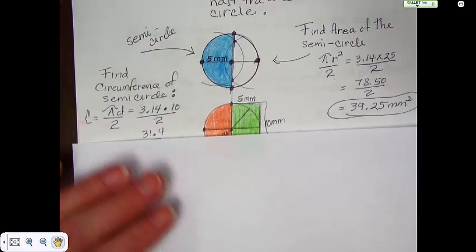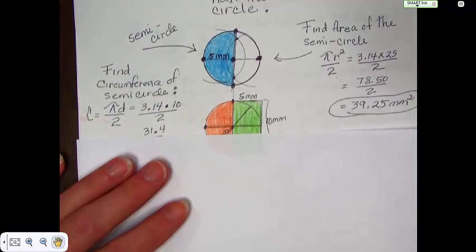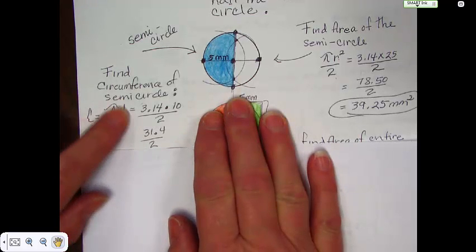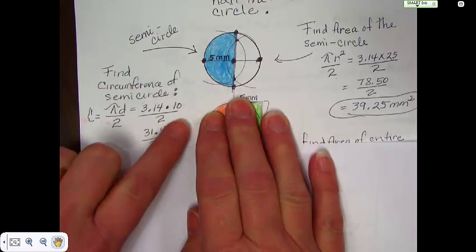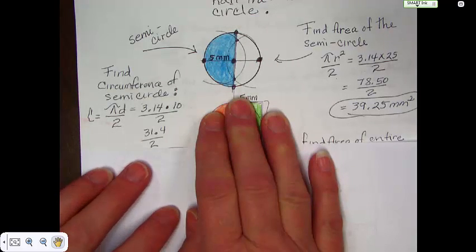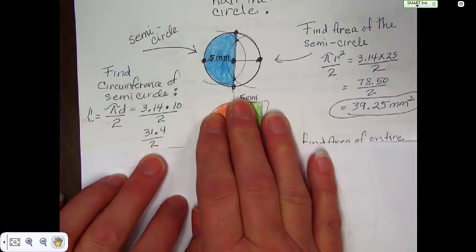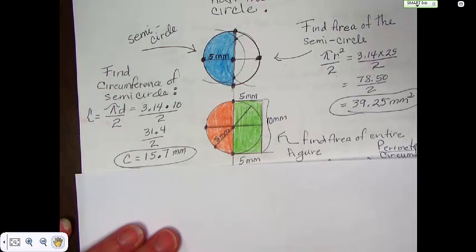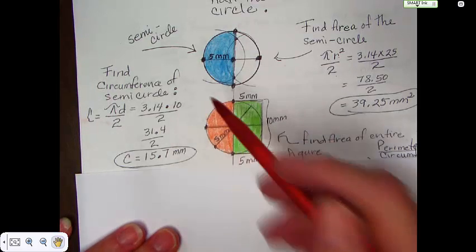If you were to find the circumference of a semicircle, you're going to use the circumference formula, which is right here, pi d. And you would take 3.14 times 10. Diameter is 10, which is 2 of the radiuses. And then you would divide that by 2. And that would give you 15.7, which is the circumference of the semicircle.